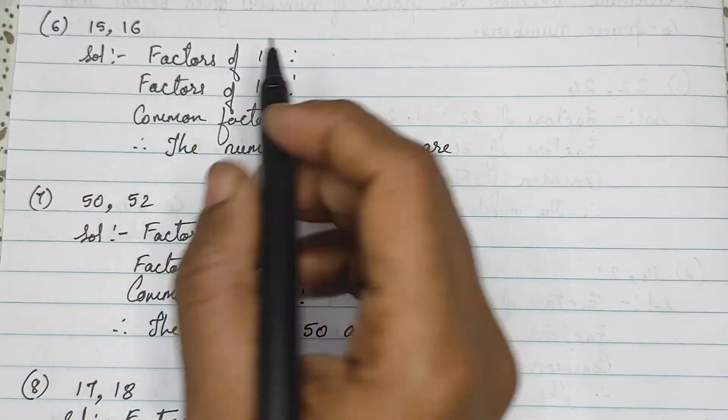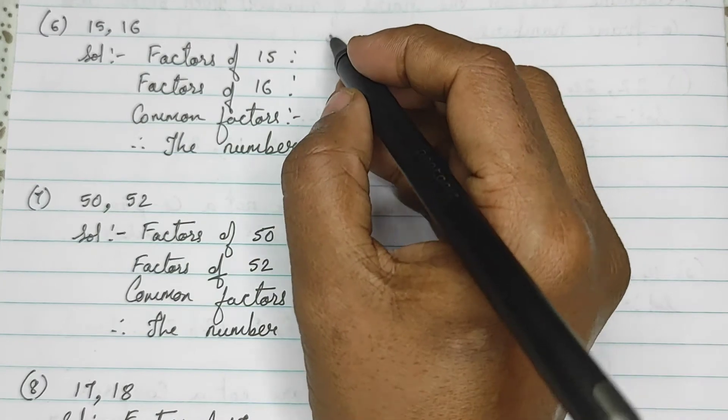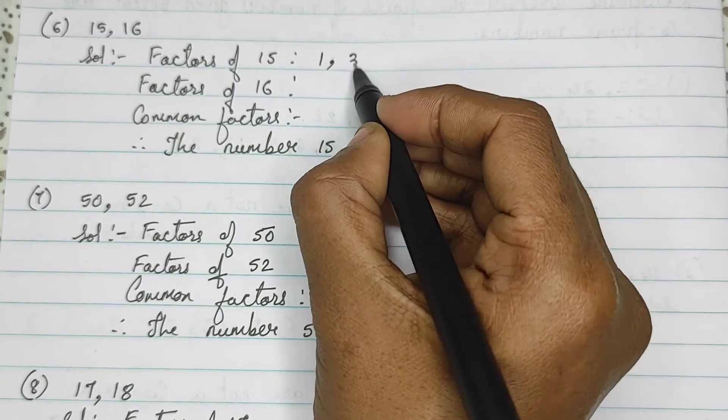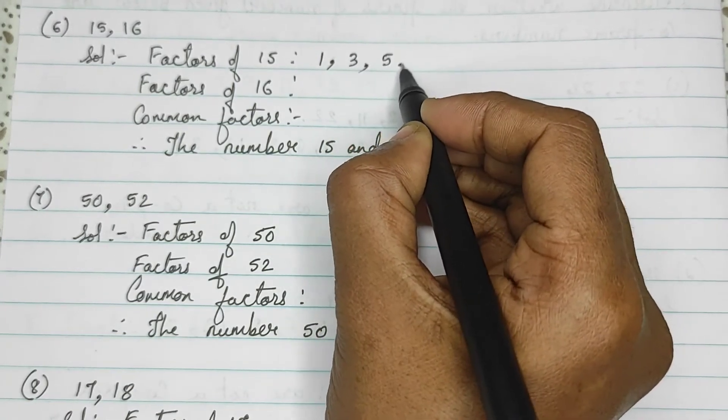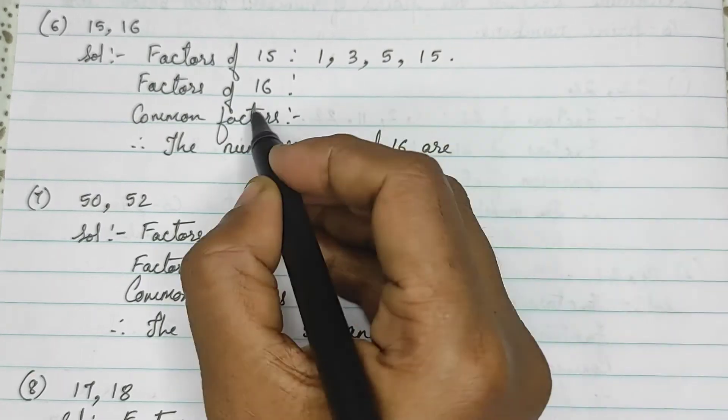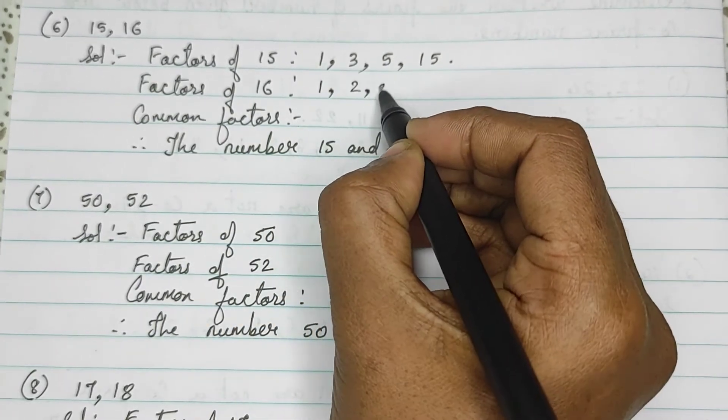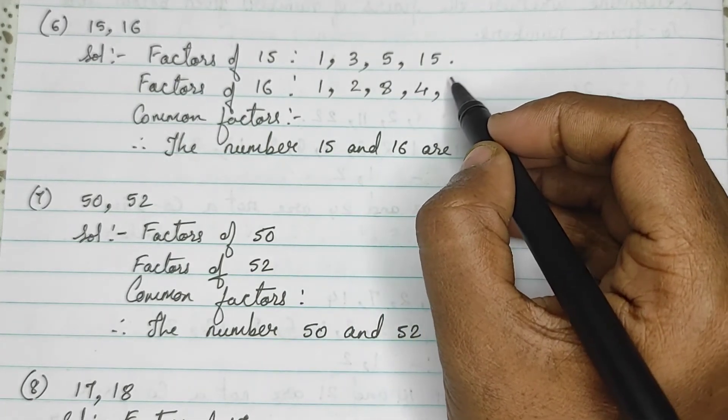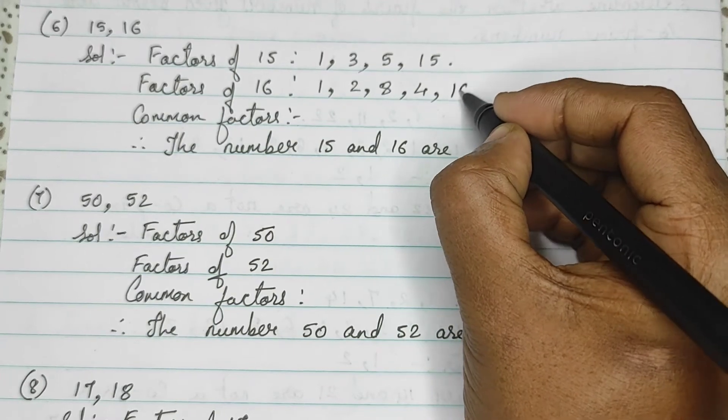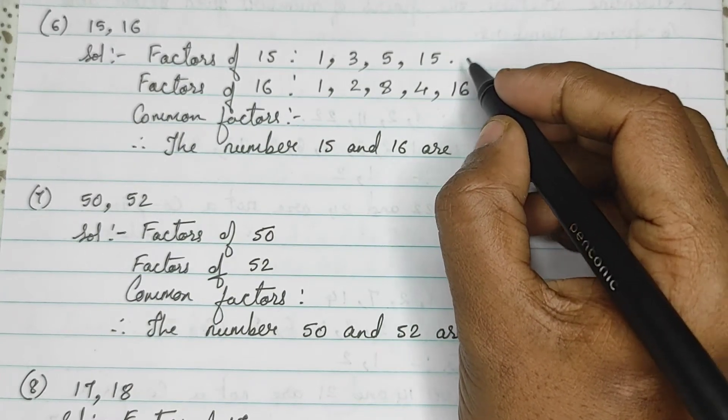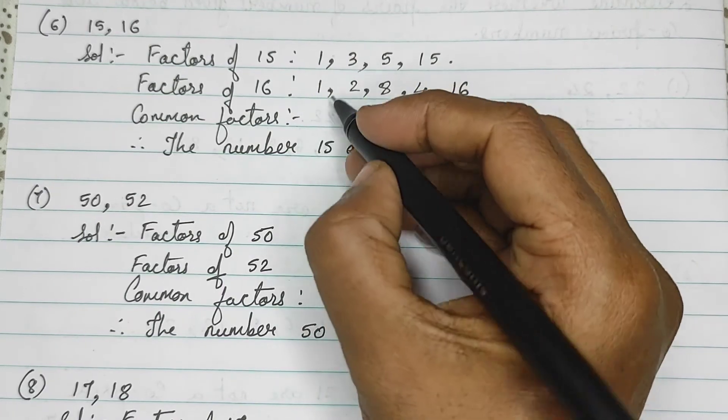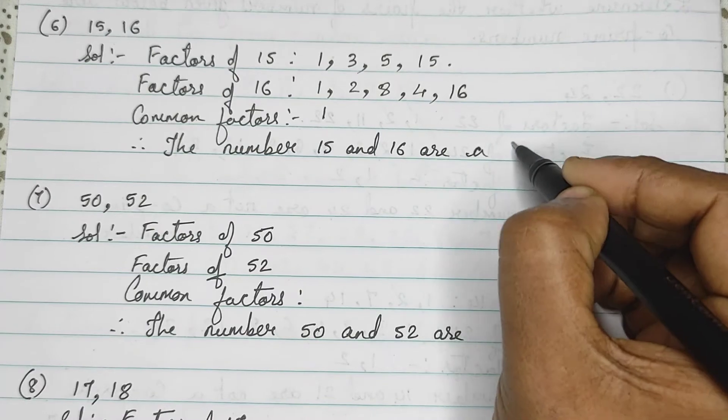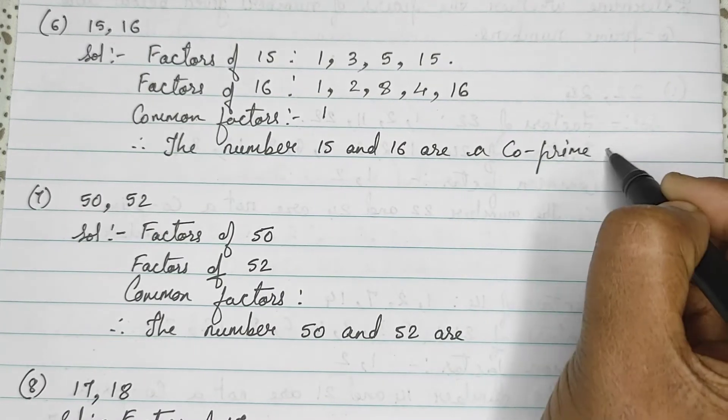Sixth sum. Factors of 15: 1, 3, 5 and 15. Factors of 16: 1, 2, 4, 8 and 16. So, here common factor is only 1. So, the numbers 15 and 16 are co-prime numbers.